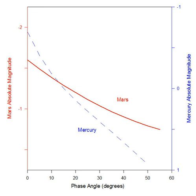Only about 50 degrees of the Martian phase curve can be observed from Earth because it orbits farther from the Sun than our planet. There is an opposition surge, but it is less pronounced than that of Mercury. The rotation of bright and dark surface markings across its disk and variability of its atmospheric state, including dust storms, superimpose variations on the phase curve.